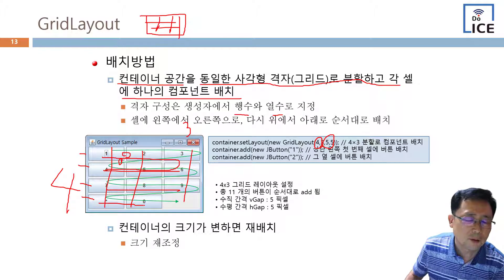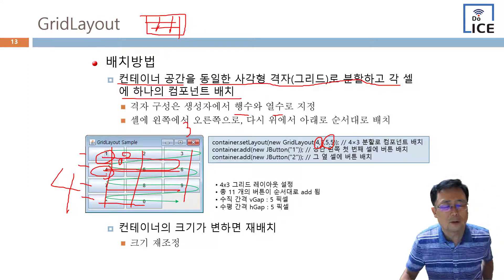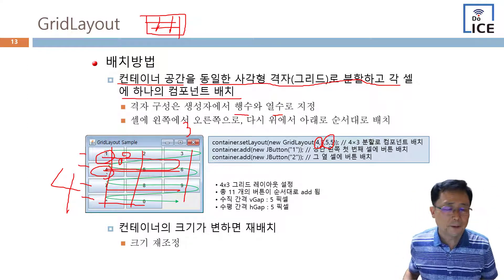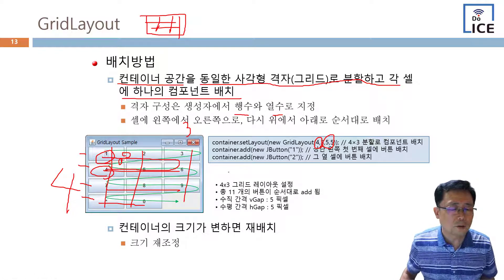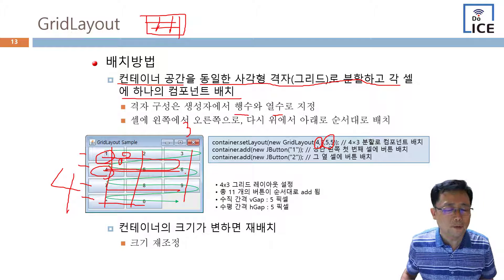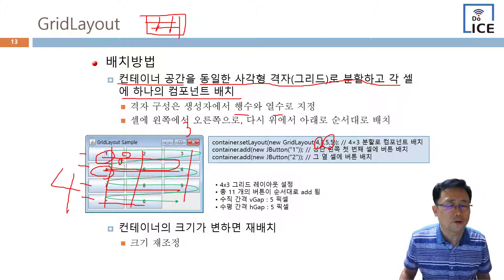순서대로 채워지는데, 처음에 많을 때는 이렇게 되는데 실질적으로 두 개밖에 없다고 하면 두 개 이렇게밖에 안 나와요. 그것에 따라 달라질 수 있습니다. 그래서 그리드 레이아웃을 쓸 때는 좀 조심스럽게 쓰셔야 돼요.